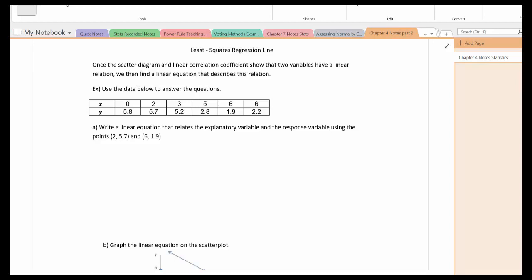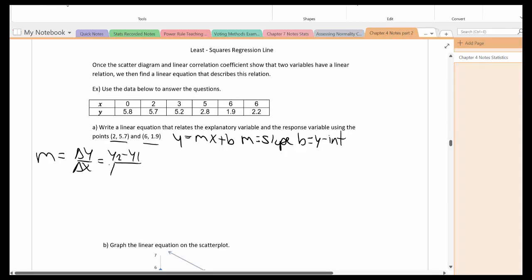Now let's write a linear equation using two specific ordered pairs like you might do in a developmental math course. Remember the equation of a line is y equals mx plus b where m is the slope and b is the y-intercept. So we need to be able to calculate the slope first. That's the change in y over the change in x which is y2 minus y1 divided by x2 minus x1.